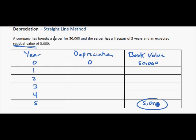So looking at this we see book value minus residual value is $45,000 and over 5 years. So what we're going to look at then is 45 divided by 5.